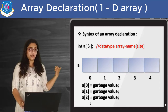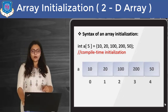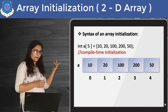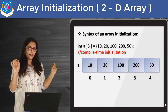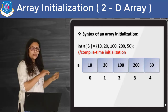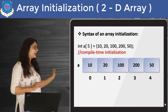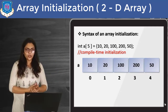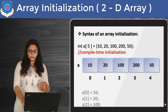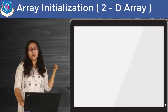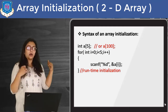Now suppose I want to initialize this one dimensional array. I can directly initialize it at declaration time. After the array declaration, you write equal to and then enclose the values inside curly braces, similar to variable initialization. So if you want to give 5 initial values, you can write 10 comma 20 comma and whatever values you want. The array which was previously having garbage values now has initial values: a[0], a[1], a[2], and so on. This is all about the declaration and initialization of a one dimensional array at compile time.